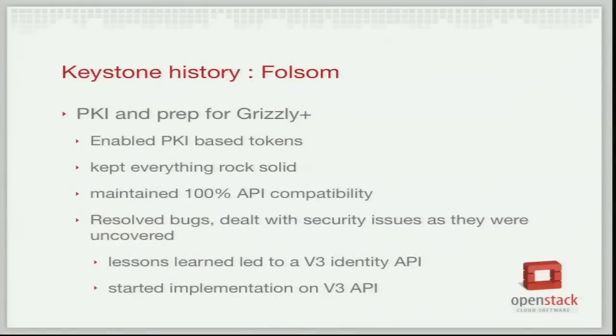That prototype was great - it got us out the door and moving forward. Right after the Diablo release is kind of when I came in and worked with others to move Keystone forward, and that became the work that went into Essex. That's when we went through and basically gutted the code base, replaced it, and kept all the API functionality exactly the same - we didn't want to change both things at once. That was also the time for the architectural shift to more independent drivers so we could back-end into read-only systems. In Folsom, the big addition was the PKI-based mechanism for tokens - not enabled by default, but hopefully by the end of Grizzly that's exactly what we'll be using as default.